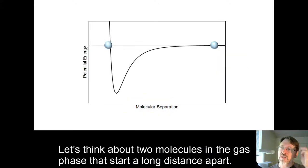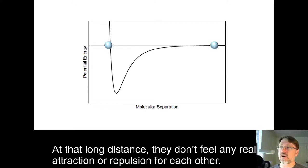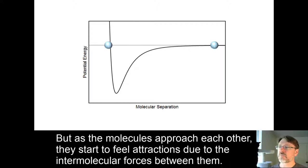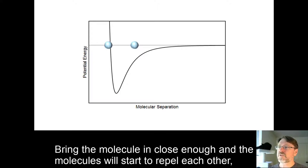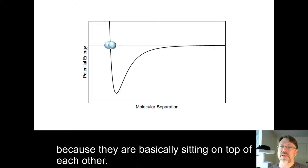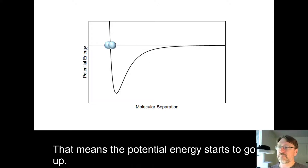Let's think about two molecules in the gas phase that start a long distance apart. At that long distance, they don't feel any real attraction or repulsion for each other. But as the molecules approach each other, they start to feel attractions due to the intermolecular forces between them. This means that the potential energy of the system goes down. Bring the molecules in close enough, and the molecules will start to repel each other because they are basically sitting on top of each other. That means that the potential energy starts to go up.